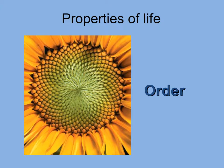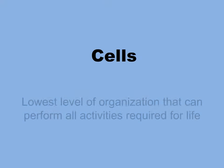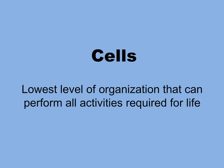All life has some kind of order. We can see order in the social hierarchy of chimpanzees, or the arrangement of reproductive structures on a flower. But at an even smaller level, all life is composed of units called cells. The cell is the basic unit of life, and all things that are alive are composed of cells — sometimes just one, sometimes millions or more.